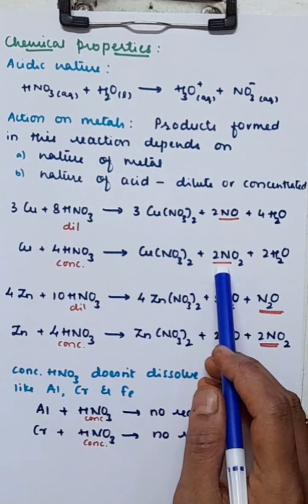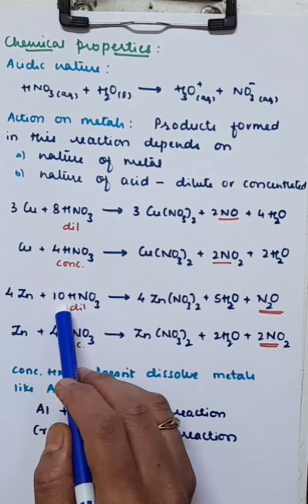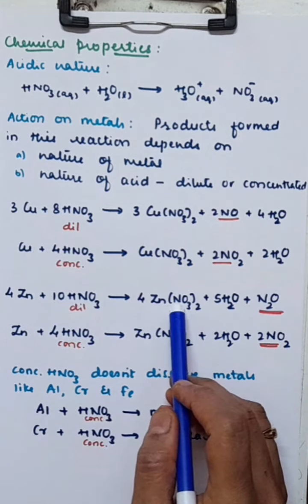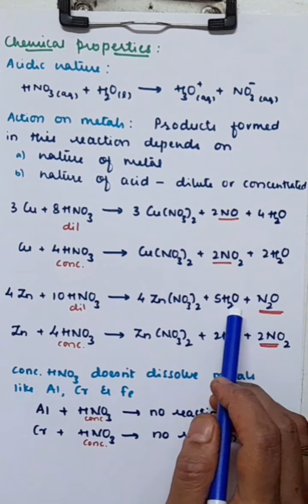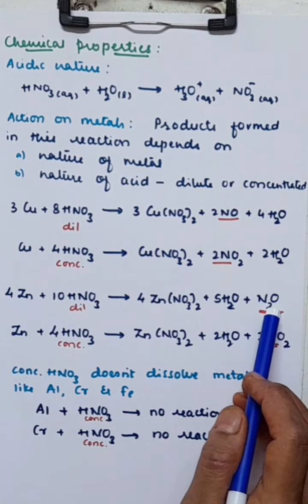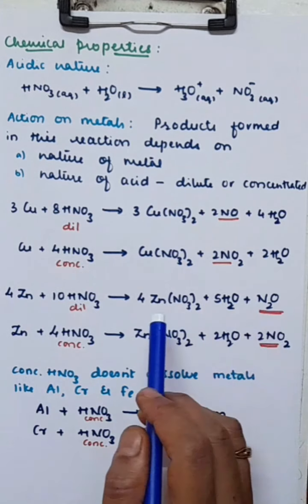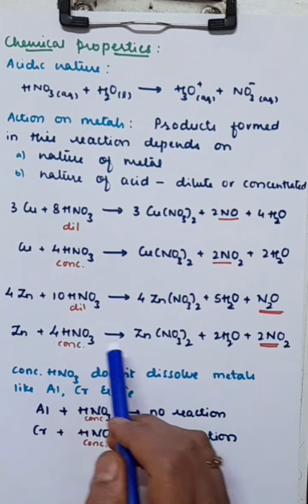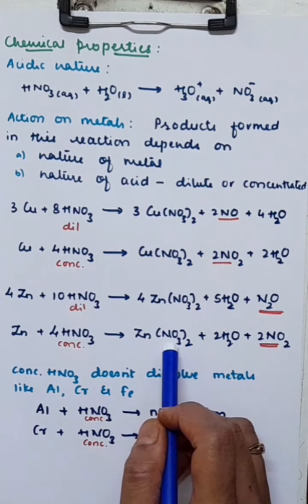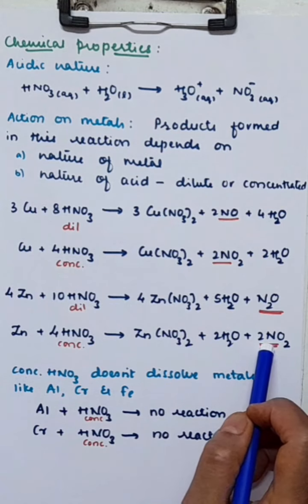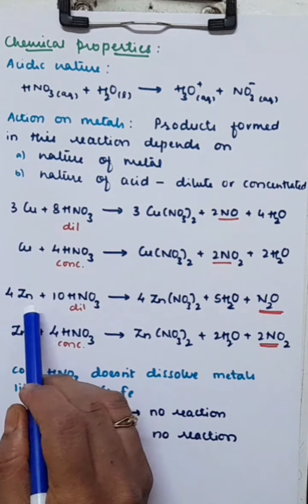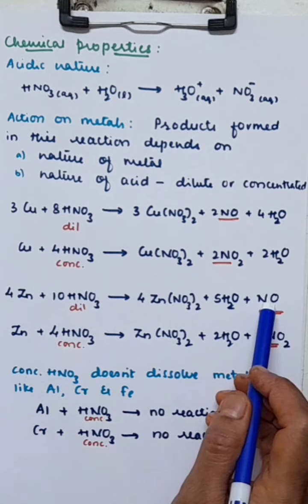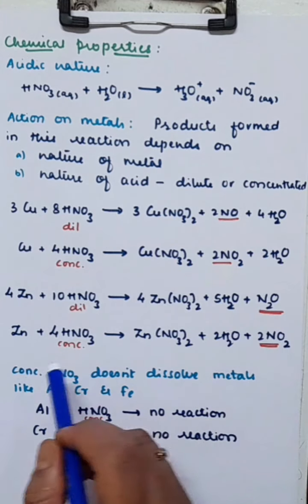Similarly, when zinc is treated with dilute nitric acid, we get zinc nitrate, nitrous oxide (laughing gas), and water. When the same reaction is performed with concentrated HNO3, zinc nitrate and water are formed along with nitrogen dioxide. So dilute nitric acid with zinc gives nitrous oxide, while concentrated nitric acid with zinc gives nitrogen dioxide.